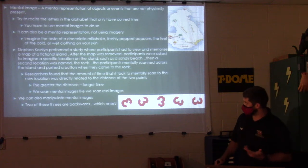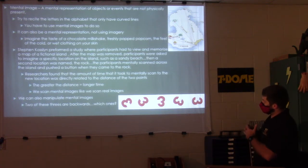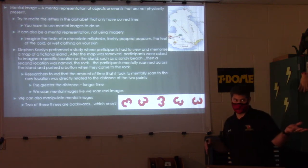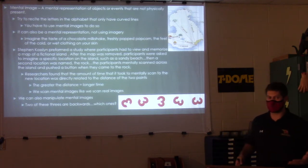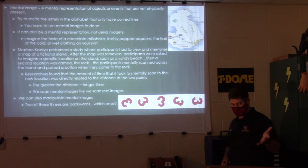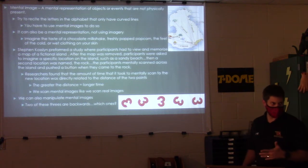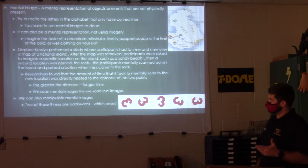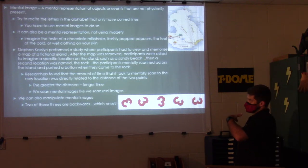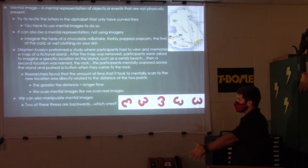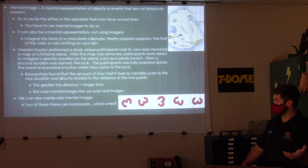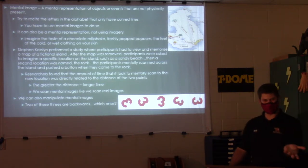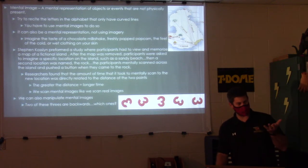Try to recite the letters of the alphabet that only have curved lines — you actually have to create mental images to do that. The alphabet's not in front of you, but you can go through it in your mind and see them. Mental representations aren't only imagery — you can also imagine the taste of a chocolate milkshake, freshly popped popcorn, the smell, or the feel of cold wet clothing on your skin.